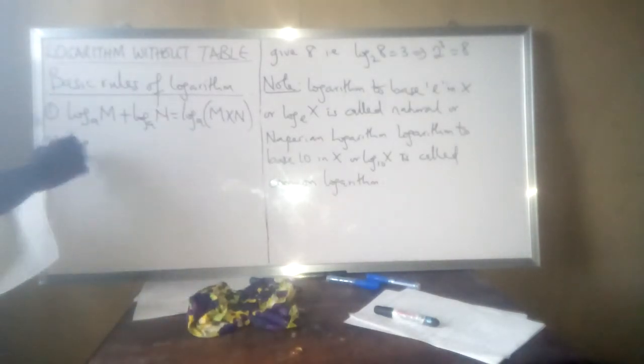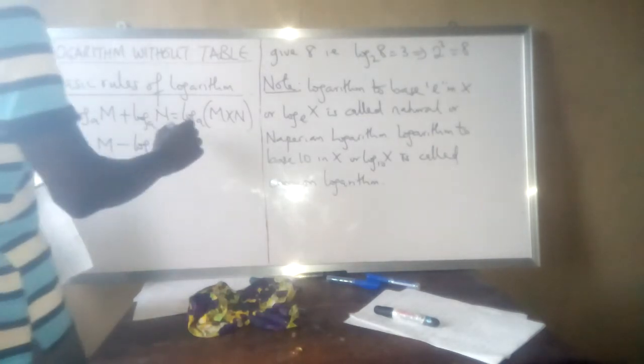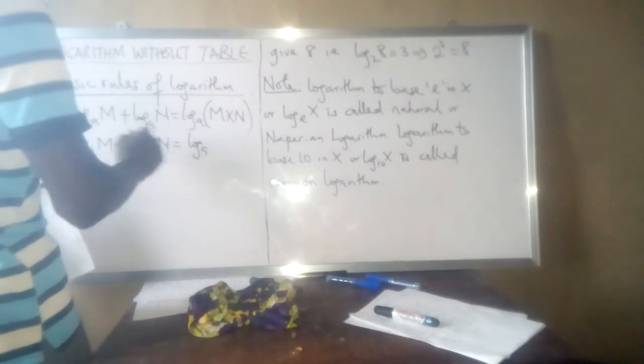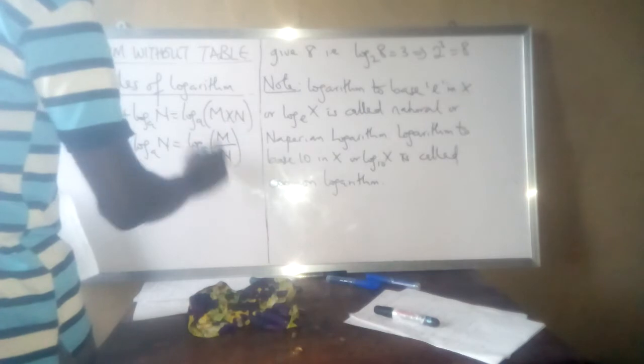The next one is division law. Log m base a minus log n base a will be equals to log base a of m all over n. That is division law.